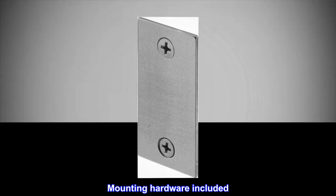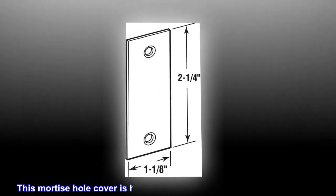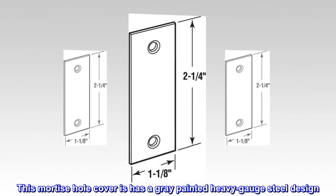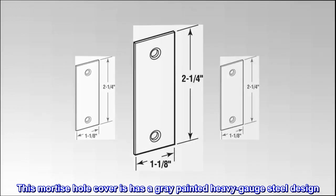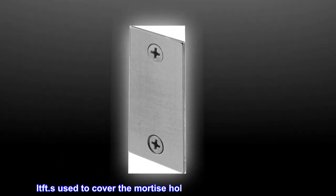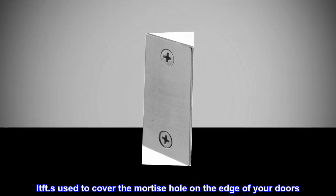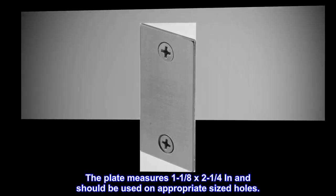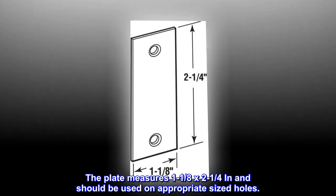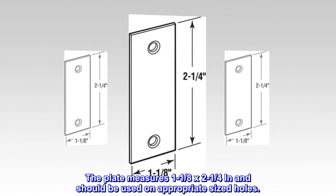Mounting hardware included. This mortise hole cover has a gray painted heavy-gauge steel design. It's used to cover the mortise hole on the edge of your doors. The plate measures 1 1/8 x 2 1/4 inches and should be used on appropriate sized holes.